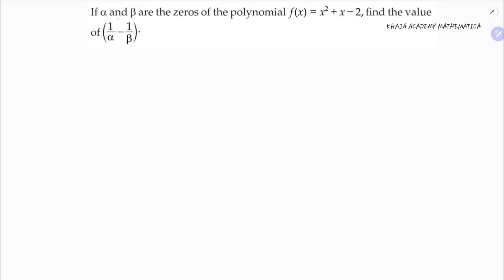If alpha and beta are the zeros of the polynomial x squared plus x minus 2, then find the value of 1 by alpha minus 1 by beta. So first I'll find the zeros.